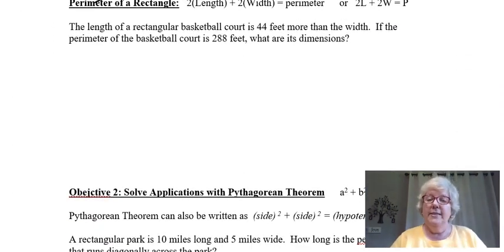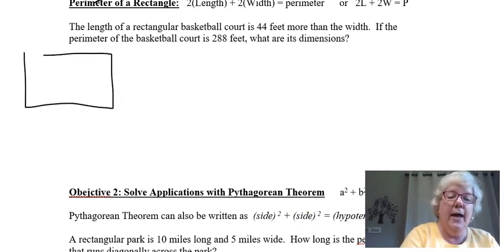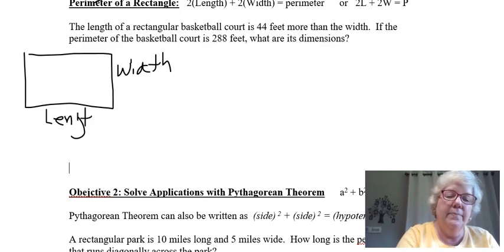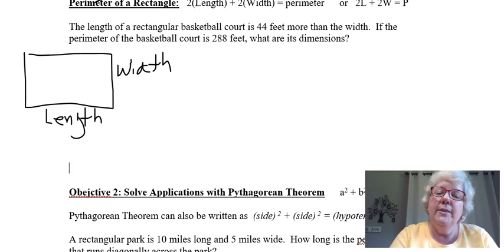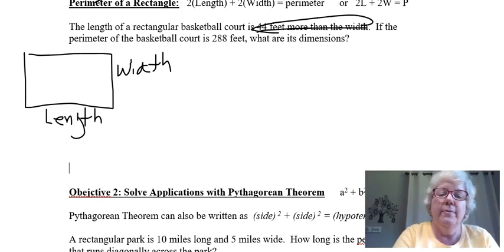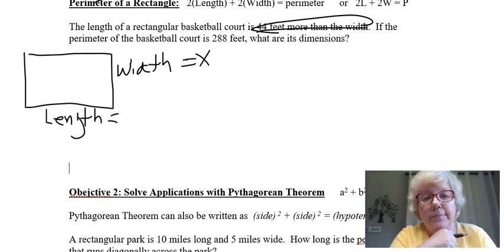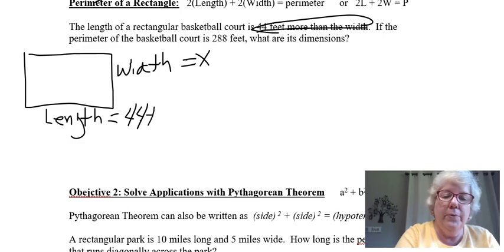Another example we see commonly used is the perimeter of a rectangle. The perimeter of a rectangle deals with a rectangular shape. I always like to draw the picture. The longest side is going to be the length, and the shortest side is going to be my width. It says the length of a rectangular basketball court is 44 feet more than the width. Go ahead and let your width be x every time. Then your length is 44 feet more than. More than is what basic operation? You're right, it's addition. So that's 44 plus x.